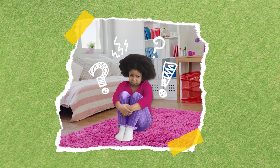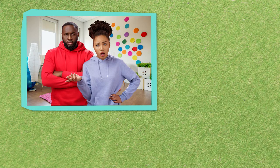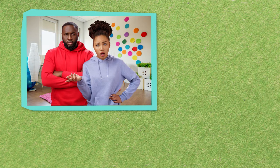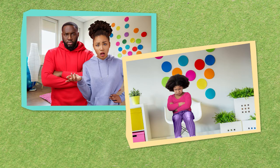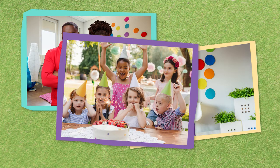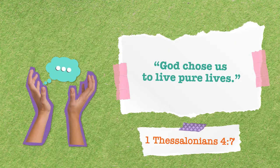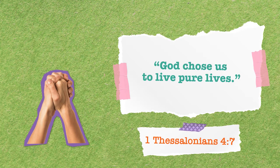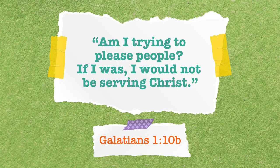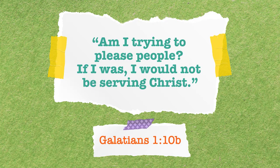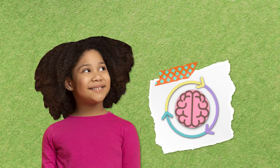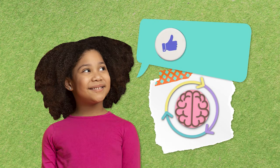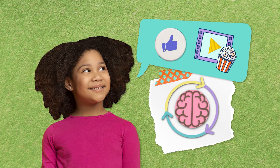Maily can continue to let her thoughts spiral out of control and choose to watch the movie, knowing that it won't please God or her parents. On second thought, if mom and dad find out, will they ever be able to trust her? Oh no, she'll never be allowed to leave the house ever again, let alone go to another birthday party! Or, Maily can catch her thoughts and check them by thinking about what pleases God, like 'God chose us to live pure lives,' or 'Am I trying to please people? If I was, I would not be serving Christ.'